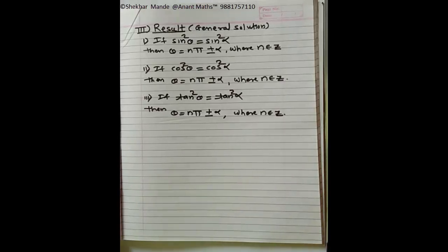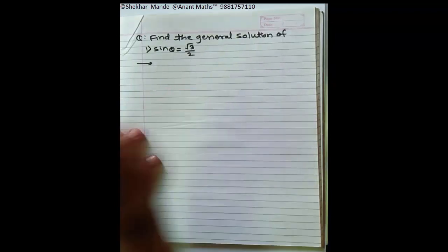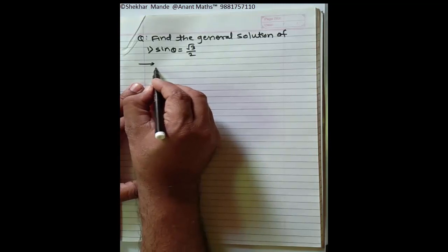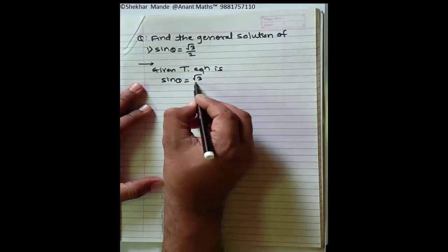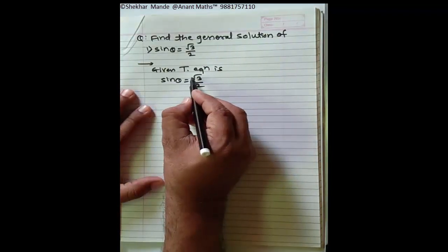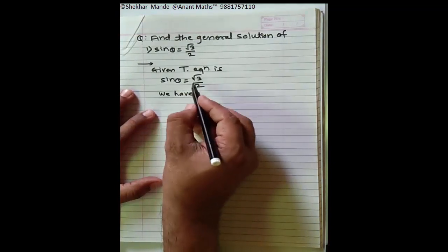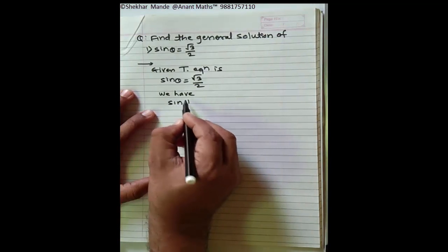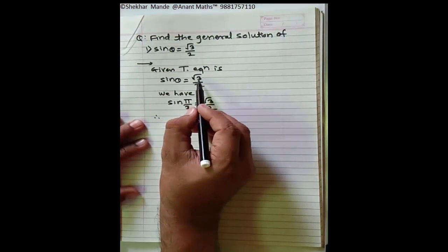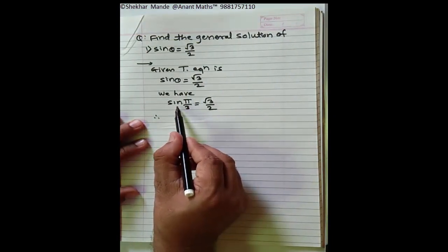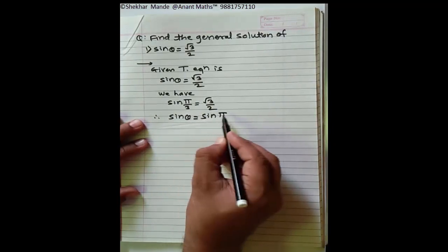Let us find the general solution of sin θ = √3/2. First, write the given trigonometric equation: sin θ = √3/2. For which value of theta is sin equal to √3/2? We know that sin(π/3) = sin 60° = √3/2. Therefore, sin θ = sin(π/3).